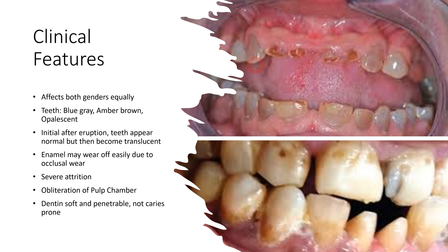The reason caries is unusual is that the dentinal tubules are fewer in number and not properly arranged — they are haphazard in nature. This decrease in number and haphazard arrangement creates hindrance for bacteria to enter inside the tooth and cause dentinal caries. That is the primary reason why these patients are not prone to caries.